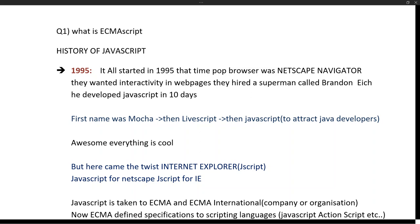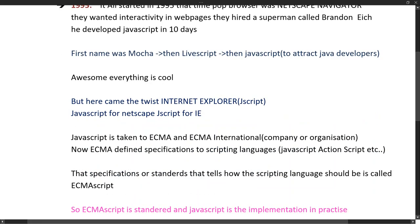Now we had JavaScript providing interactivity to web pages, but a problem arose. The biggest competitor to Netscape Navigator was Internet Explorer. What Internet Explorer did was copy features from JavaScript, add its own features, and create its own version of the JavaScript programming language, which they named JScript.